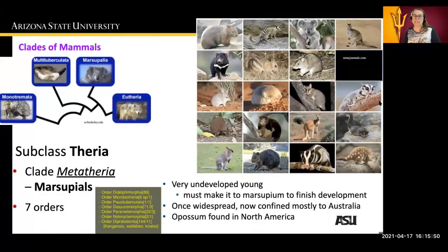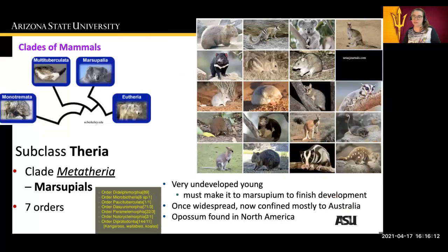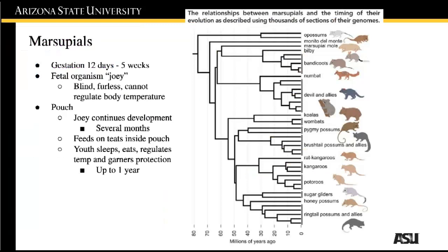Another subclass of mammals is Theria. The first clade we'll talk about is Metatheria. Metatheria are the marsupials, and there are seven orders of marsupial. These include things like koala bears, kangaroos, wombats, wallabies, and various organisms found in Australia. There is only one organism found in North America, and it's the possum.